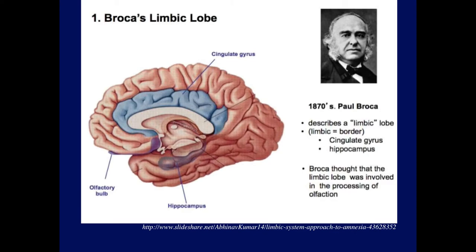Dr. Kumar, who has a very interesting slideshow on the internet, was the only one who really accurately described what Broca talked about: the cingulate, the hippocampus, and the olfactory system. However, in the writing, Broca mentions only the cingulate and hippocampus. The olfactory part is key because Broca was very interested in the olfactory system and its changes during evolution.